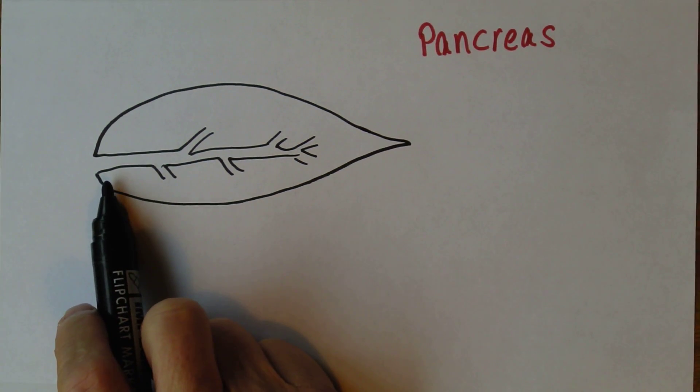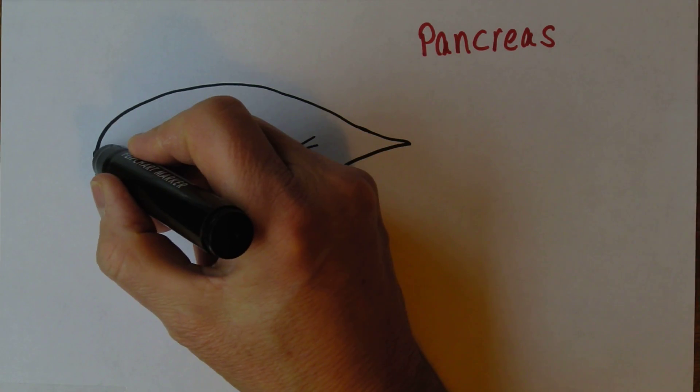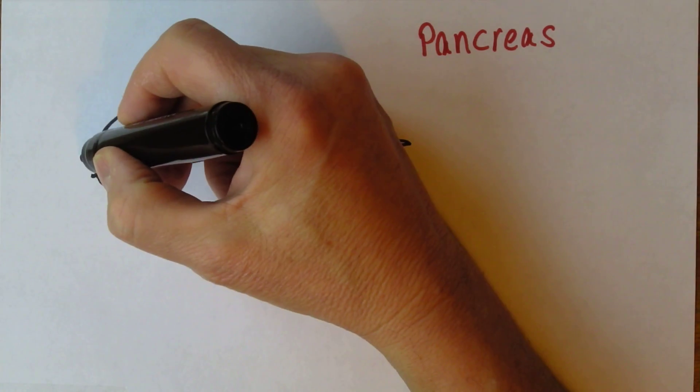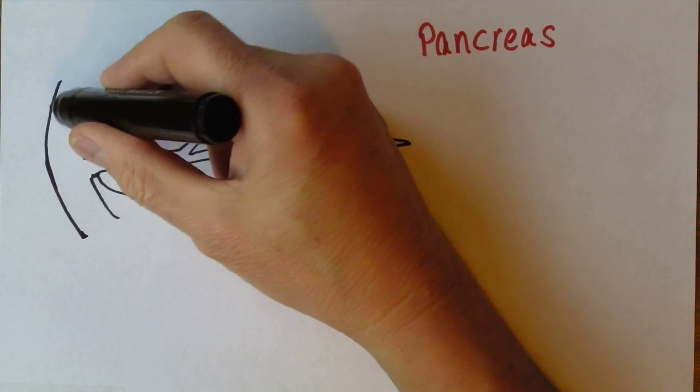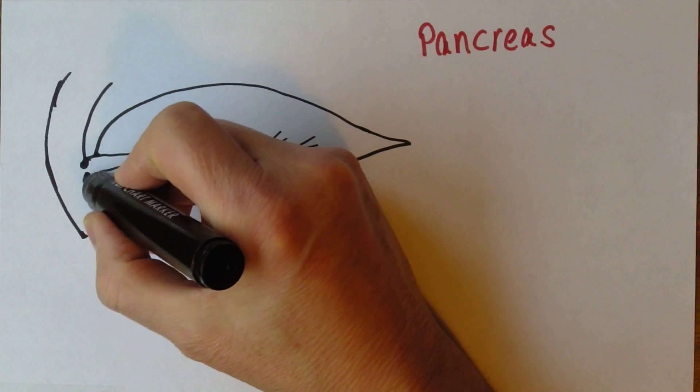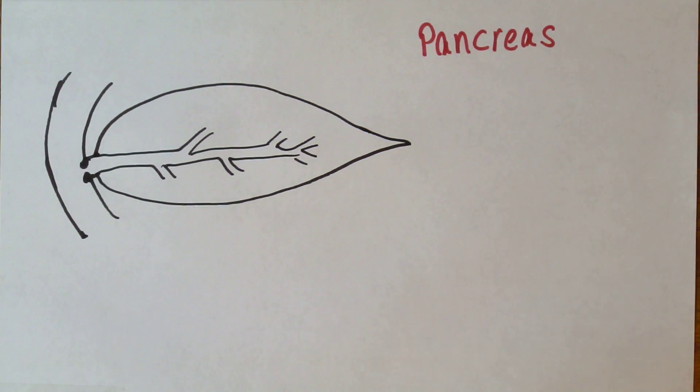So this would be the head towards the right, and this tube actually goes out and joins up with the curve of the duodenum via a sphincter here that's called the sphincter of Oddi.